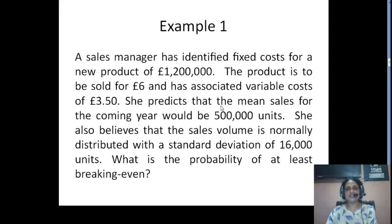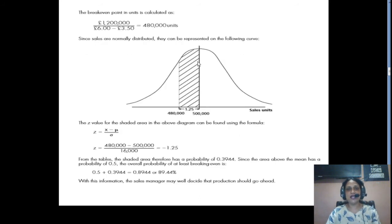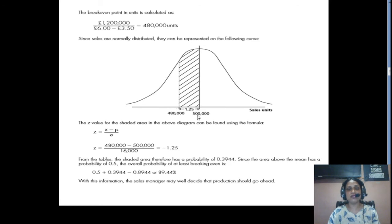We have to first find out the break-even point. BEP = £12,00,000 ÷ (£6 − £3.50) = 4,80,000 units. In the question, it is written that the mean sales would be 5,00,000 units. On the normal distribution curve, the mean line is at 5,00,000. The break-even point of 4,80,000 is less by 20,000 units, so it will come to the left side of the 5,00,000 mean sales line. We will draw another line at 4,80,000 units.